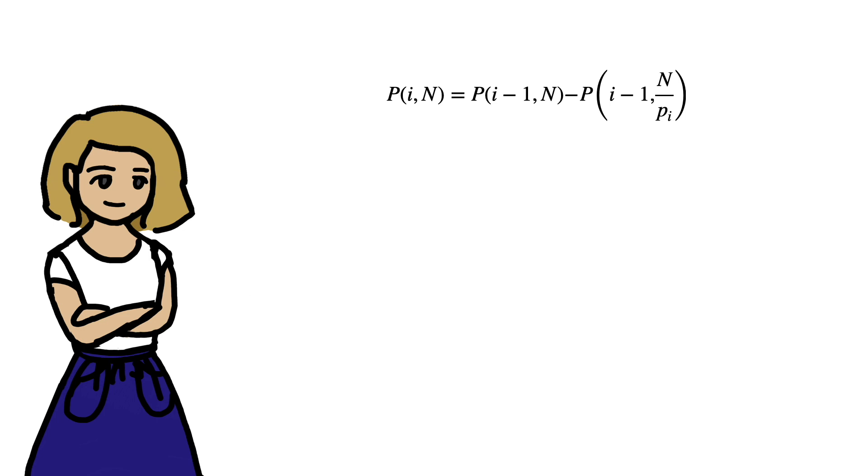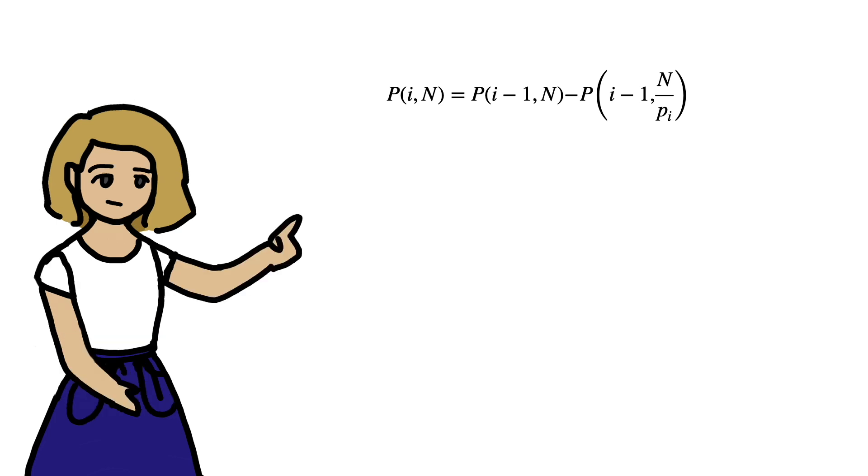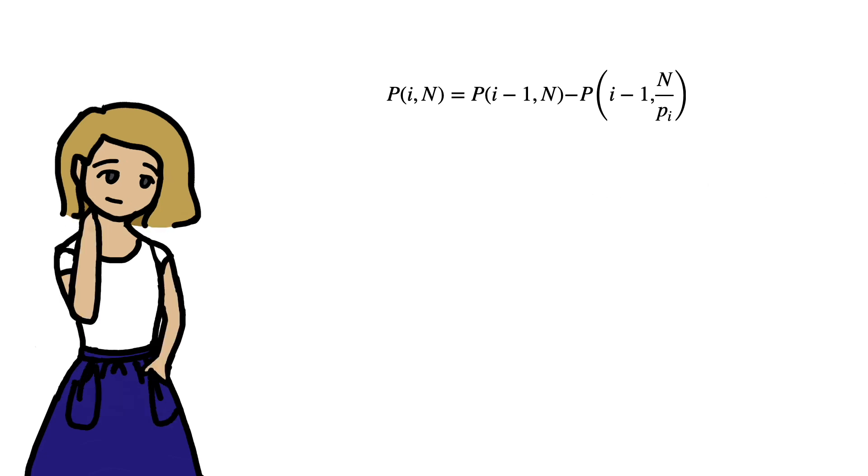So, this recurrence property is the key to deriving Legendre's formula. I'll clear up some details. It only holds for i greater than or equal to 1. Otherwise, the right-hand side would refer to negative iterations of the sieve. And now one very relevant question would be, what exactly is P(0,b)?